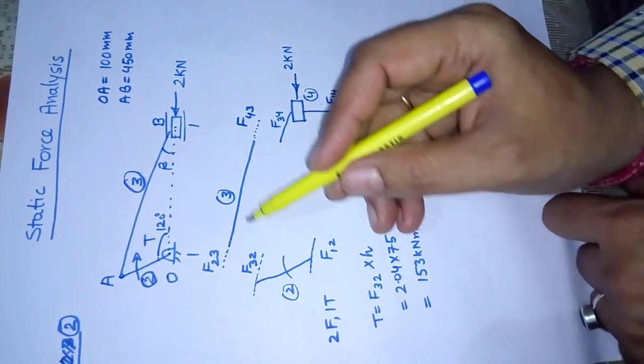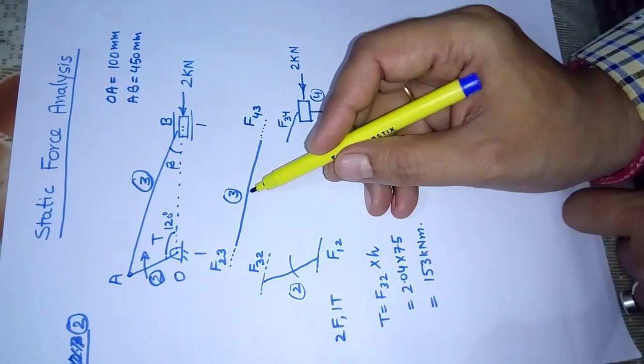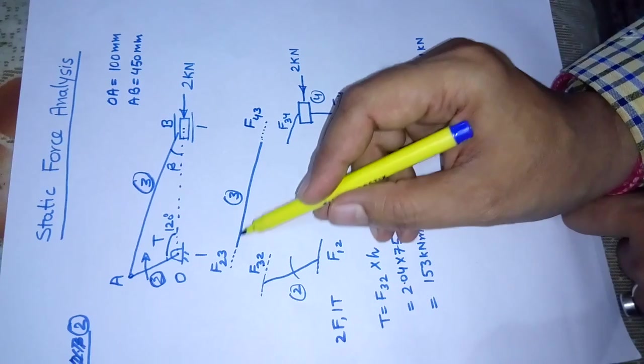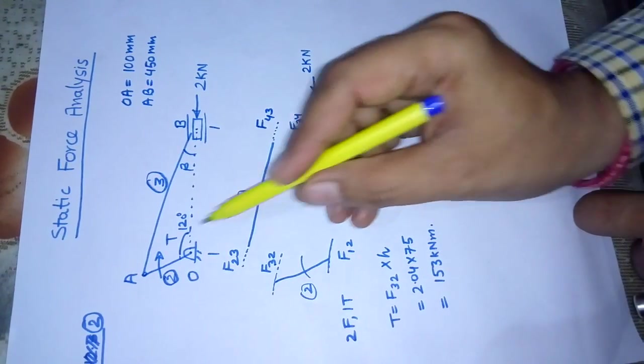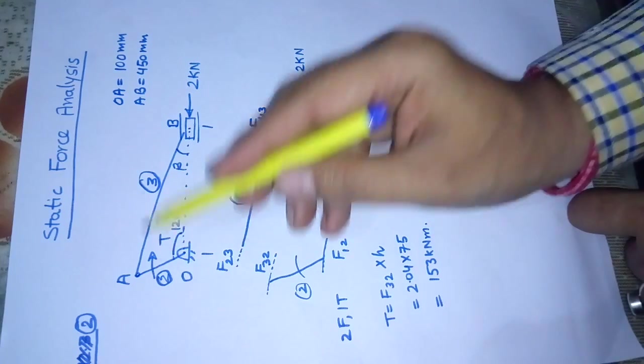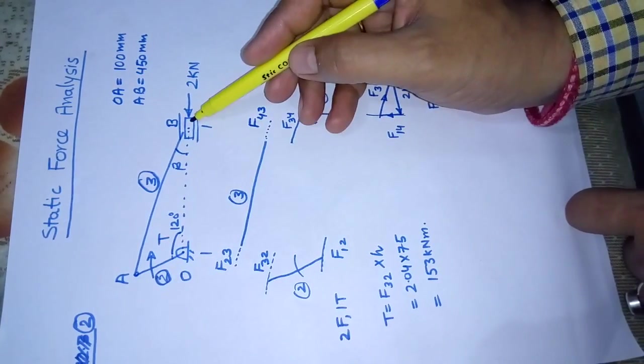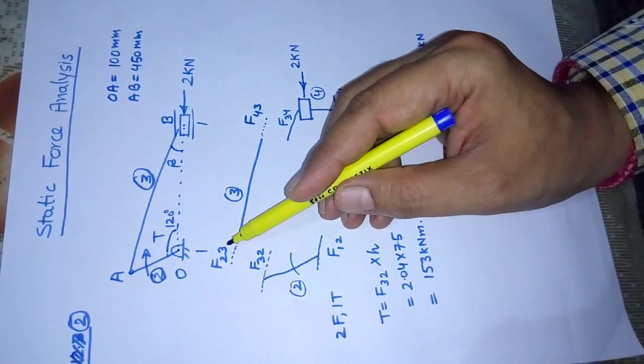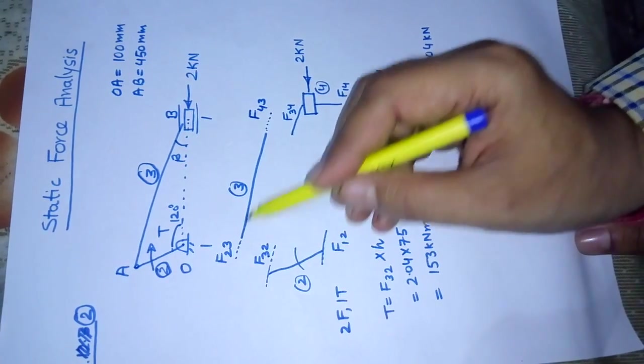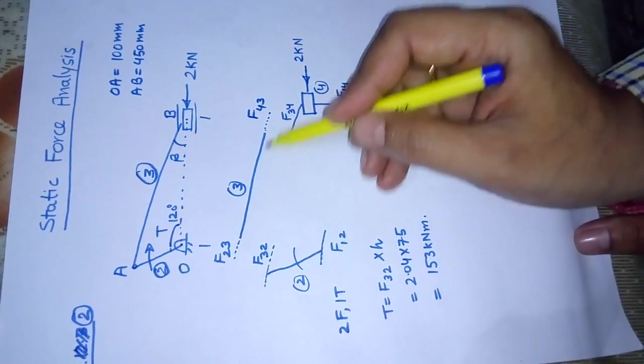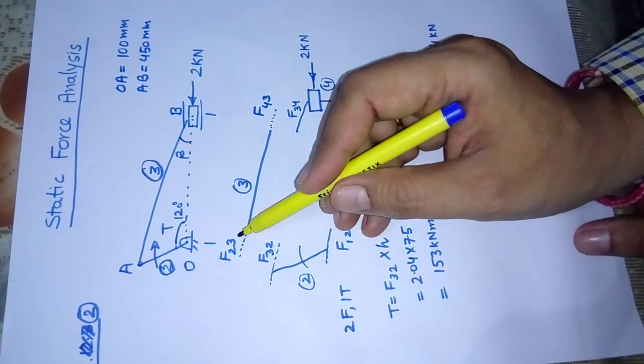Now, what are the directions of these forces? We will see the FBD of link number 3. Link 3 has a two-force system: force on 3 because of 2, and force on 3 because of 4. As a two-force system should have forces equal and opposite, we assume their line of action parallel to link 3.